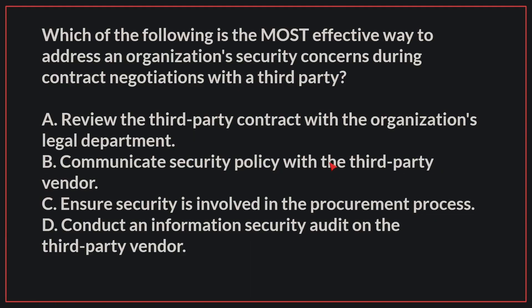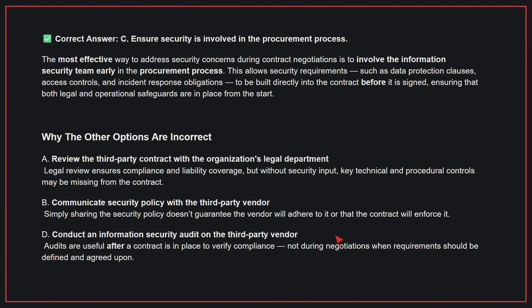Which of the following is the most effective way to address an organization's security concerns during contract negotiations with a third party? The correct answer is C: ensure security is involved in the procurement process. The most effective way is to involve the information security team early in the procurement process, allowing security requirements such as data protection clauses, access controls, and incident response obligations to be built directly into the contract before it is signed, ensuring that both legal and operational safeguards are in place from the start.